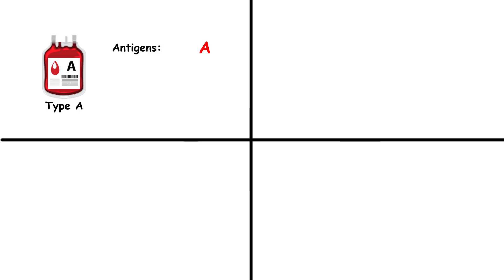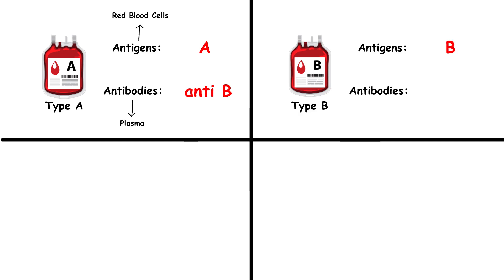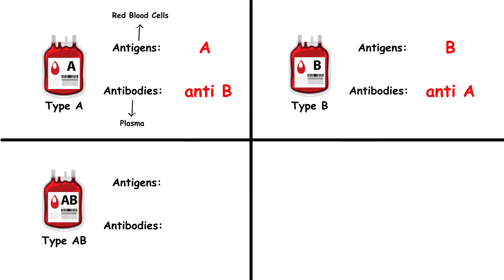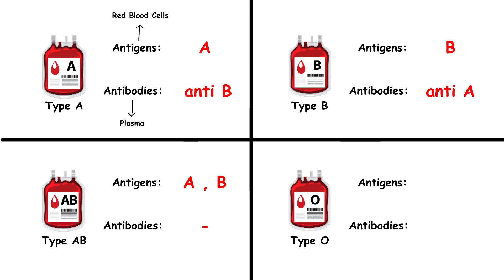Type A blood has A antigens on the surface of red blood cells and anti-B antibodies in the plasma. Type B blood has B antigens on the surface of red blood cells and anti-A antibodies in the plasma. Type AB blood has both A and B antigens on the surface of red blood cells and no anti-A or anti-B antibodies in the plasma. Type O blood lacks both A and B antigens on the surface of red blood cells, but contains both anti-A and anti-B antibodies in the plasma.